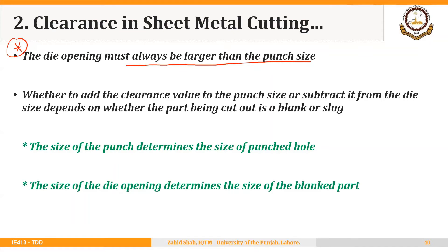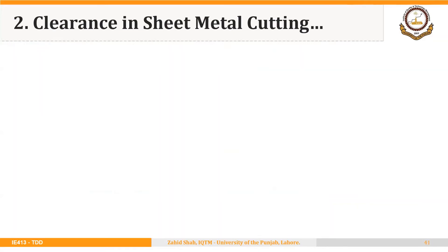If it is a punching operation, the size of the punch determines the size of the punched hole. We add the clearance to the punch size to determine the size of the die. If the part being cut is a blank, the size of the blank determines the size of the die opening, and we subtract the clearance from the die size to determine the size of the blanking punch. That is the rule of thumb.